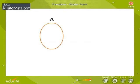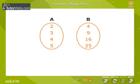Let us consider set A with elements 2, 3, 4, 5 and set B with elements 4, 9, 16, 25. The relation R between them is square root of.